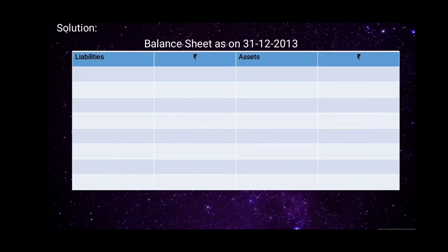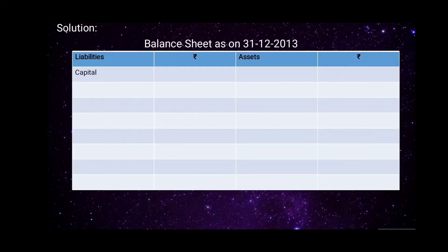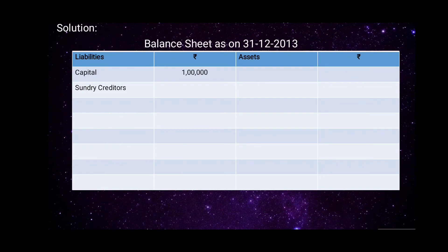Now let us prepare the balance sheet as on 31st December 2013. On the liabilities side: capital is rupees 1 lakh. Next, sundry creditors amount is rupees 12,000.